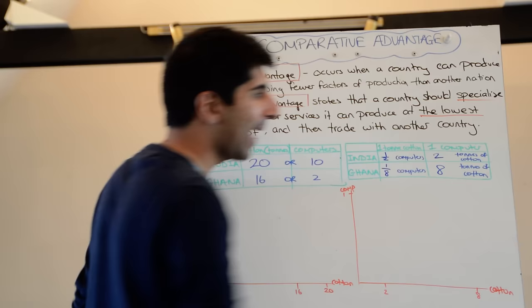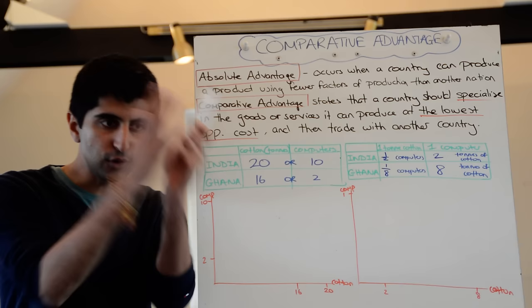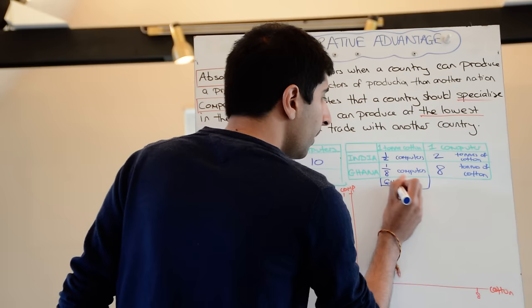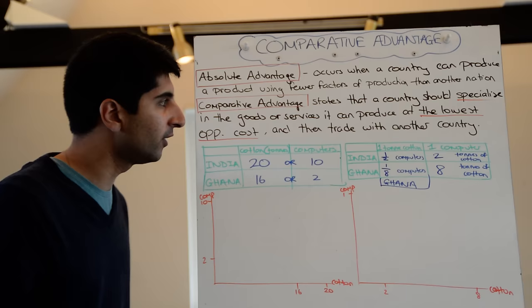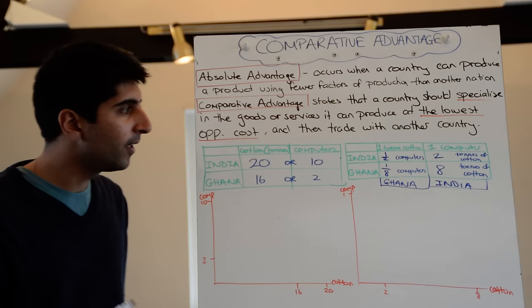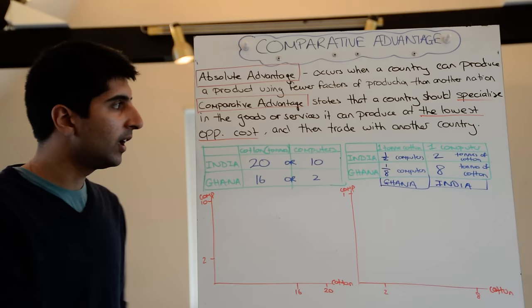So David Ricardo says, having done those calculations: whoever's got the lowest opportunity cost wins — they should specialise in producing that good or service and trade freely with another country. Who's got the opportunity cost advantage in producing cotton? It's Ghana, because for each tonne of cotton they're producing, they're only giving up an eighth of a computer, whereas India are giving up half. For computers, India has the comparative advantage — they're only giving up two tonnes of cotton, whereas Ghana are giving up eight. So Ghana wins for cotton, India wins for computers. Each country should therefore specialise in those respective products and trade with each other.